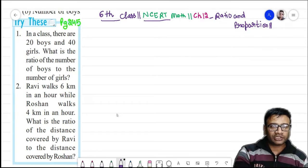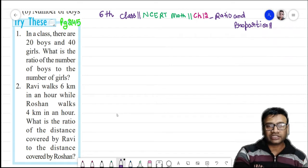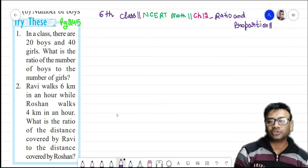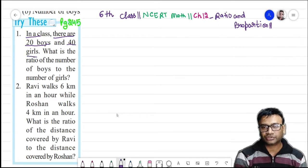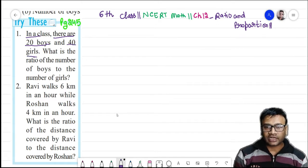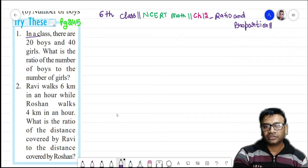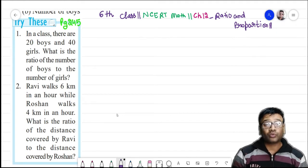What is it saying to us? Please listen carefully then we will do the solution of this. In a class there are 20 boys and 40 girls. Have you understood? There is a class in which number of boys are 20 and the number of girls are 40. What do we need to do?